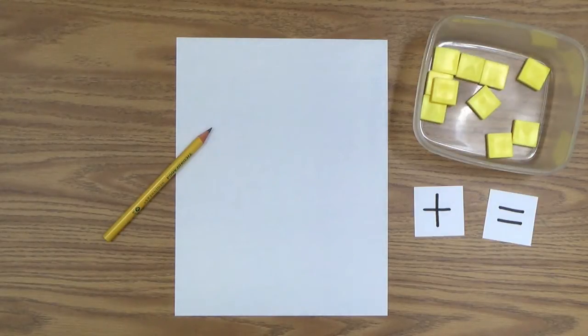How many crackers did I eat all together? Or you might want to say, how many total crackers did I eat? And you could point out to your child that this is what we call an addition problem. It's a number story, and we're trying to solve a problem. We need to add these two quantities together to find out how many crackers I ate in total.